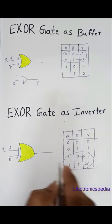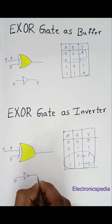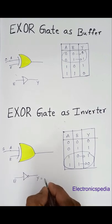That means this is my input B, this is my output Y, which equals B bar.